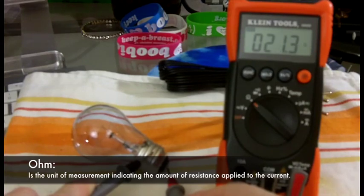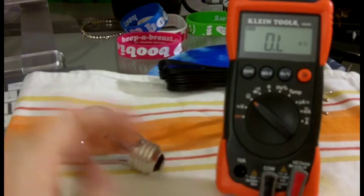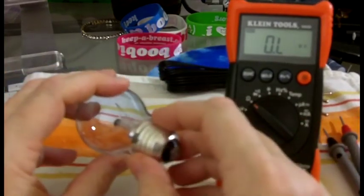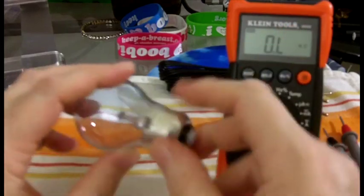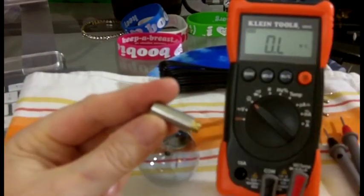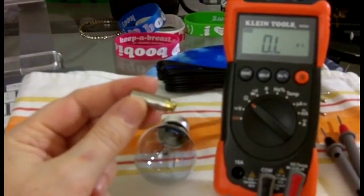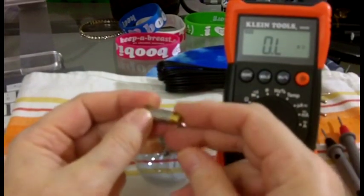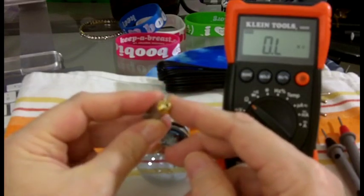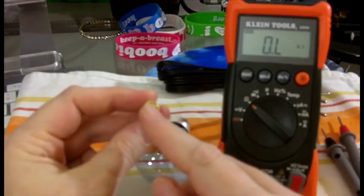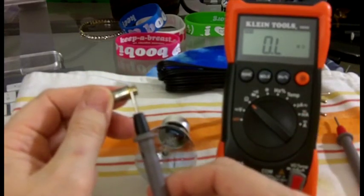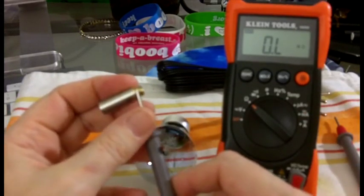So same principle and we'll take a look at a 510 atomizer. Keeping in mind threads are the black, post is the red. Here's a LR 510. And the threads are smaller, so this is kind of hard to do while you're holding the atomizer or holding the thing. So black to the outside threads.